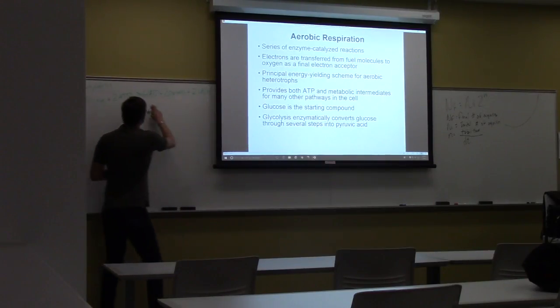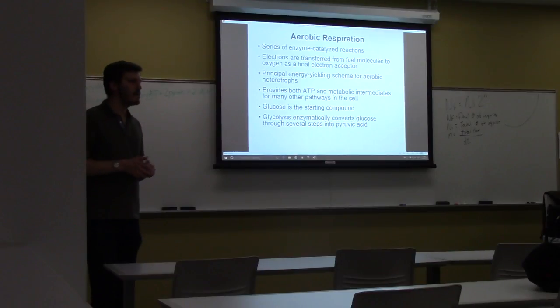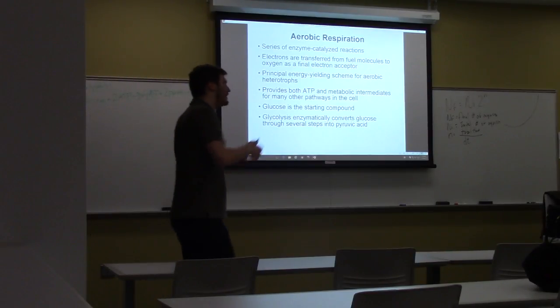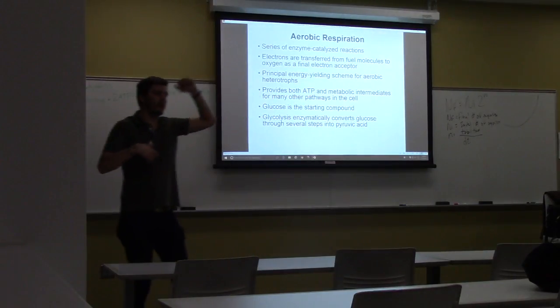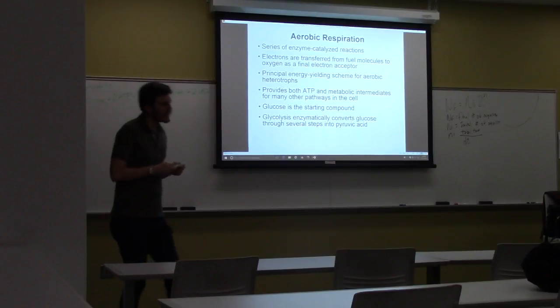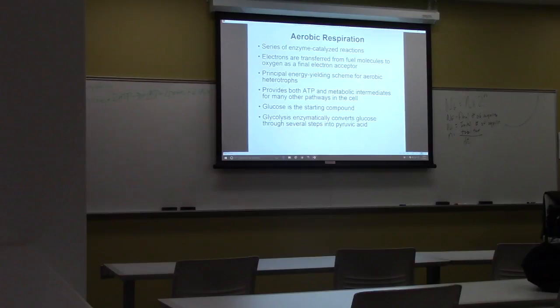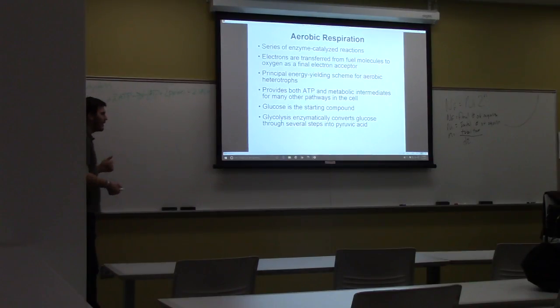Where did these ATP come from? These four ATP. So what is it called when I get ATP at the site of a reaction without the electron transport chain, or without electron carriers? Substrate level phosphorylation. So these ATP came from substrate level phosphorylation. Good. And how many ATP did I get from glycolysis? Two. Put two in, got four. Four minus two is two.